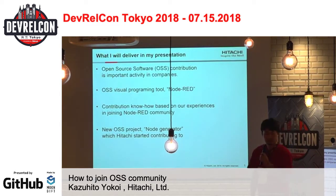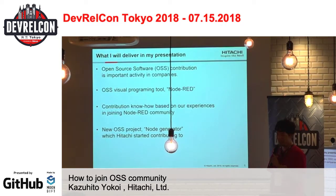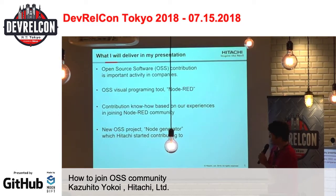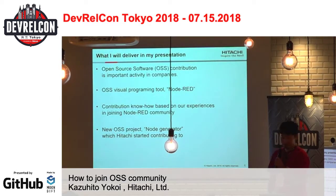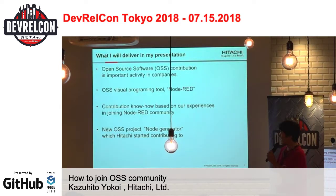Let me start from what I will deliver in my presentation. First, I will explain why open source software contribution is important activity in companies. Next, an open source software visual programming tool called Node-RED, which was developed by IBM and Hitachi mainly, I will introduce about the software. And third, based on my own experience in joining Node-RED IoT, I want to introduce a new open source project, Node-RED, which Hitachi started contributing to.